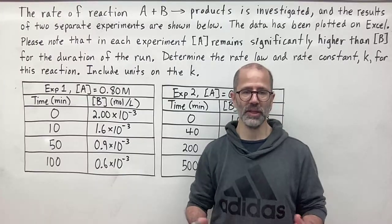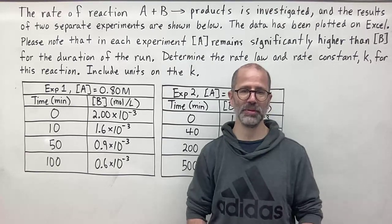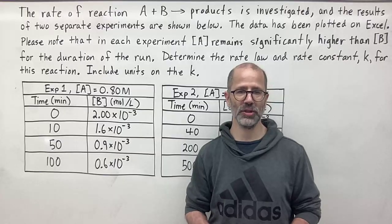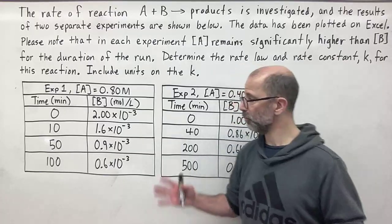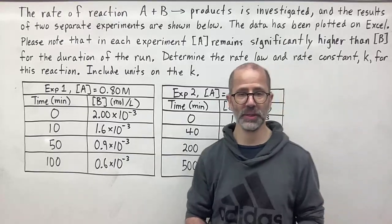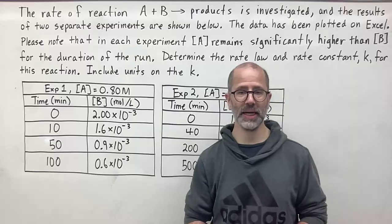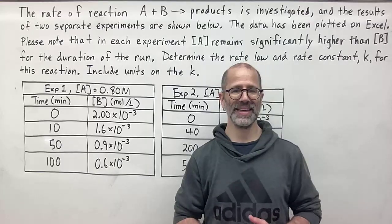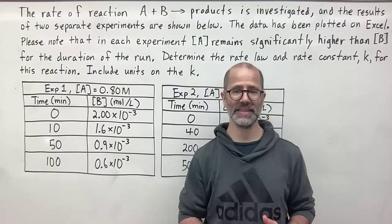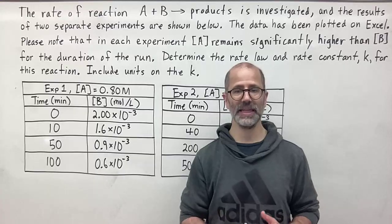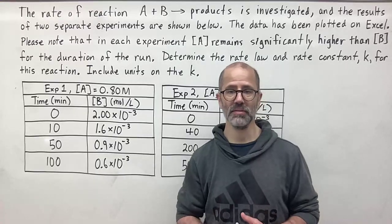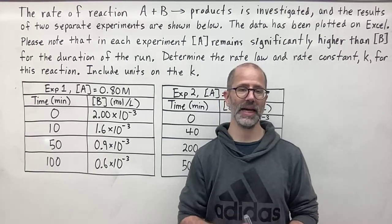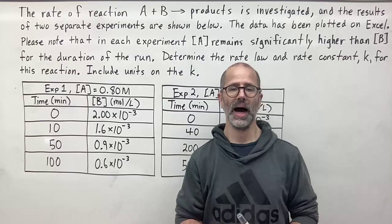So in this problem we have the rate of a reaction A plus B gives us products, and it is investigated and the results of two separate experiments are shown below in these tables. The data has been plotted in Excel. Please note that in each experiment the concentration of A remains significantly higher than the concentration of B for the duration of the run. Determine the rate law and the rate law constant K for this reaction, including the units on K.